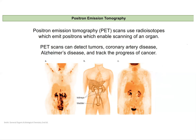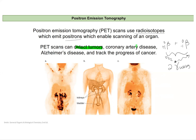Positron emission tomography is another example of using radioisotopes to scan organ function. We use radioisotopes that emit positrons. When a positron — basically a positive electron — and an electron come together, they are matter and antimatter, and they annihilate to become two gamma waves. We can then detect those gamma waves and use this to detect tumors, artery diseases, and track Alzheimer's and the progress of cancers. Here's an example of a PET scan showing the kidneys and the bladder.